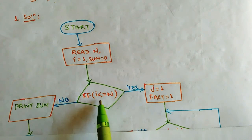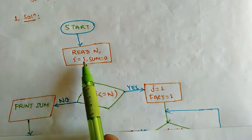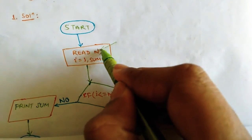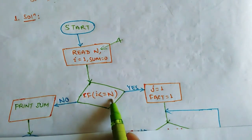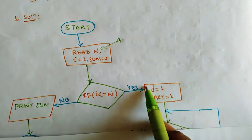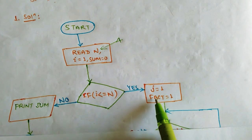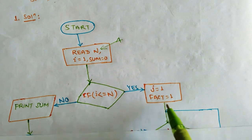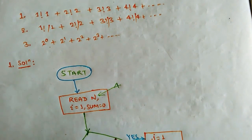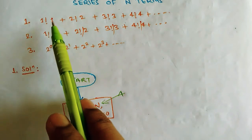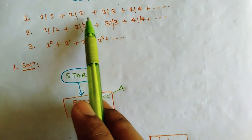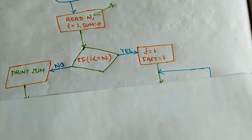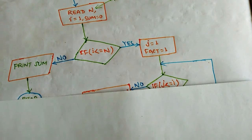We check: is i less than or equal to n? For example, if n is 4, then 1 is less than 4 — yes. When the condition is true, we come to this part. Here we initialize two variables: j is set to 1 and fact is set to 1. We do this because a simple factorial value is not precomputed — in every iteration we have to calculate 1 factorial, then 2 factorial, then 3 factorial. This means if you understand the factorial flowchart, this problem becomes easy. So we include the factorial logic here.